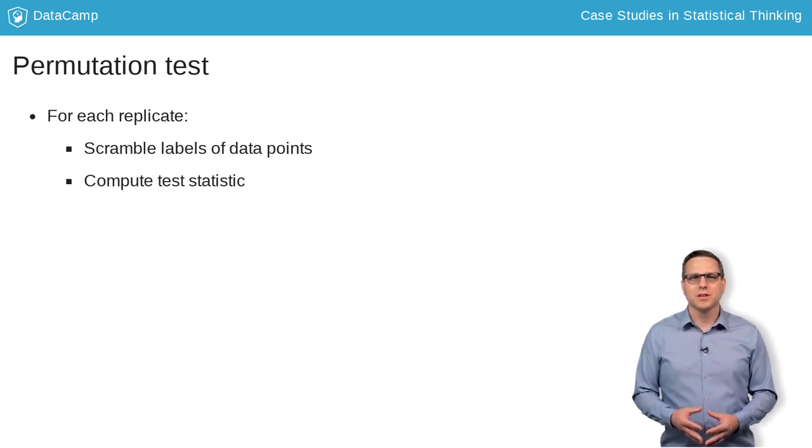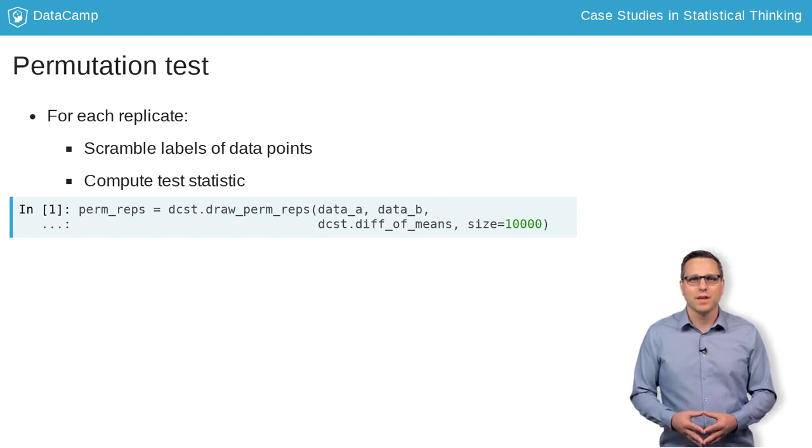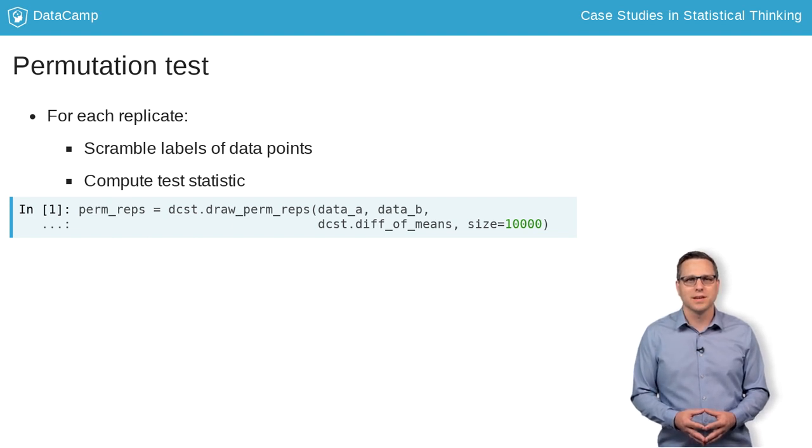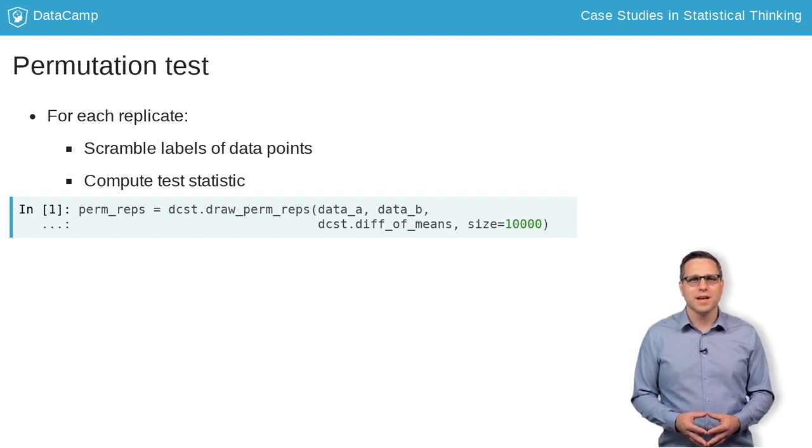You implemented this in the drawpermreps function of the dcstatthink module. The first two arguments are the two data sets you are comparing in the hypothesis test. The third argument is a function used to compute the test statistic. You already wrote one to do difference of means, and it is also included in the dcstatthink module.